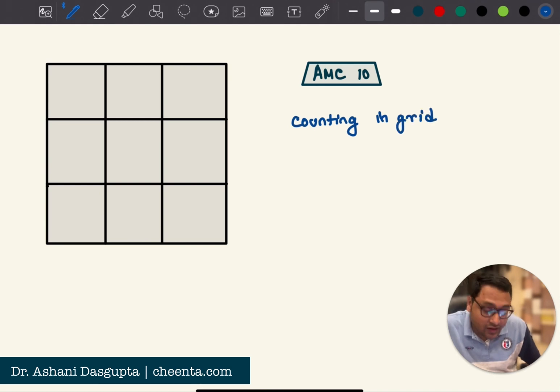So in the AMC 10, this was posed as a probability question, but as you will realize that at this level, probability is actually just combinatorics. You count the possibilities, that's all. So let me explain what the problem is.